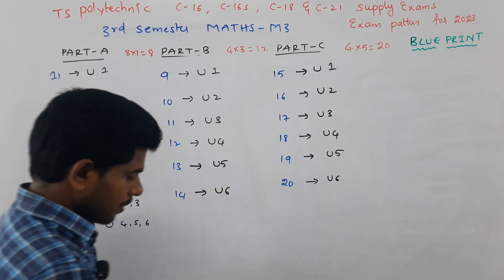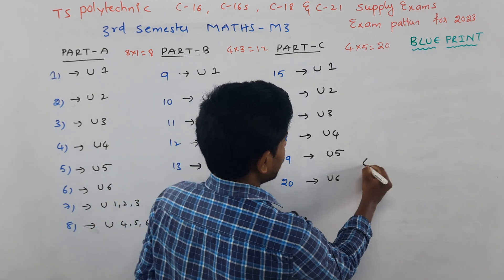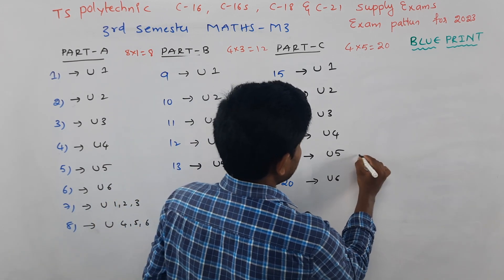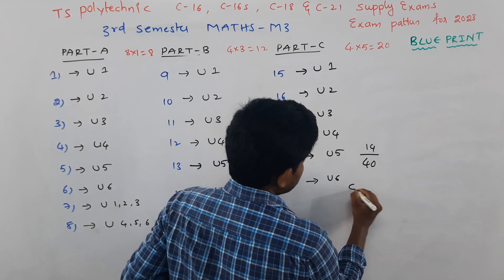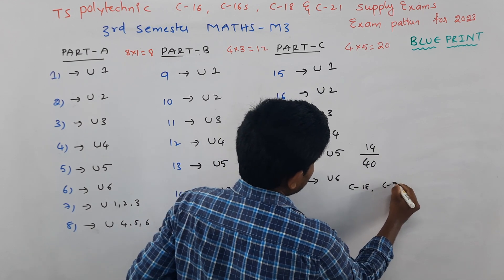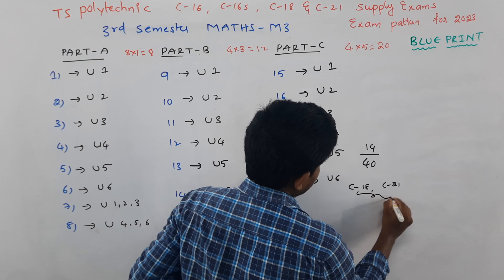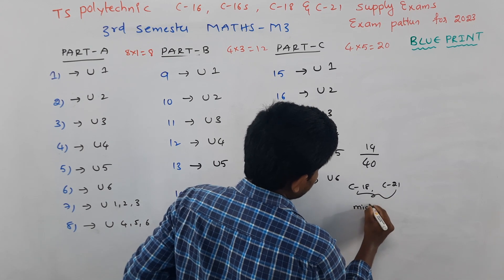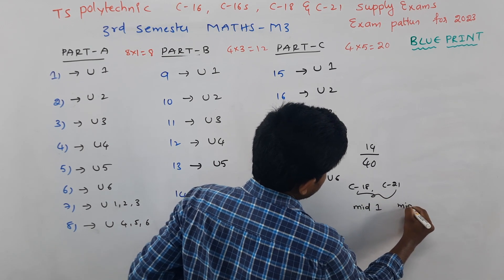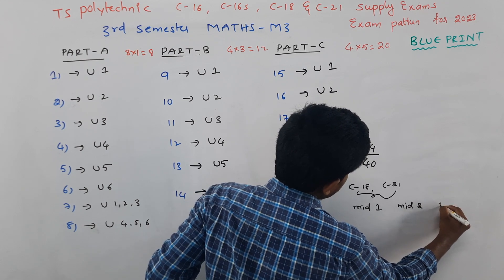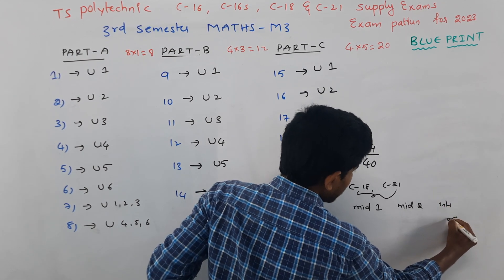The total question paper is 40 marks. Out of 40 marks, you need 14 marks to pass. C18 and C20 already have two mid exams — mid one and mid two. Next, there are internals, and internals carry marks as well.